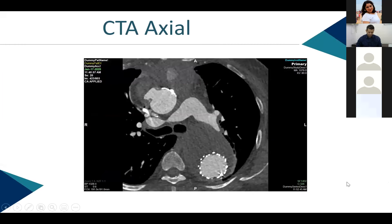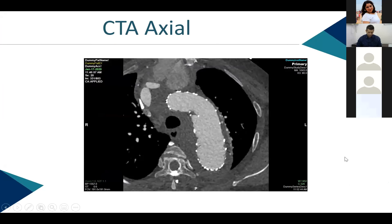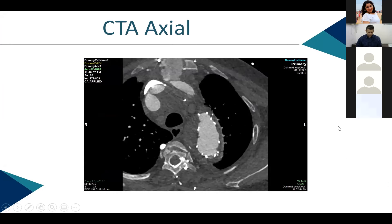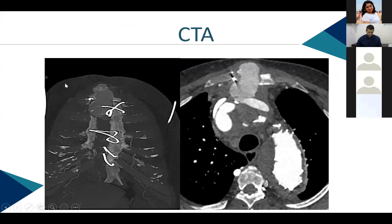Sternal dehiscence is a serious complication of median sternotomies. Non-infective sternal dehiscence is not uncommon. Literature documents broken sternal wires presenting with right ventricular injury, pulmonary artery migration with hemoptysis, cardiac tamponade, or ventriculo-atrial fistulas. Most closely related to this case is aortic graft pseudoaneurysm secondary to fractured sternal wires — exactly what happened here. After stent graft repair, the sternal wire was removed under IV sedation; swelling visibly decreased within one week.